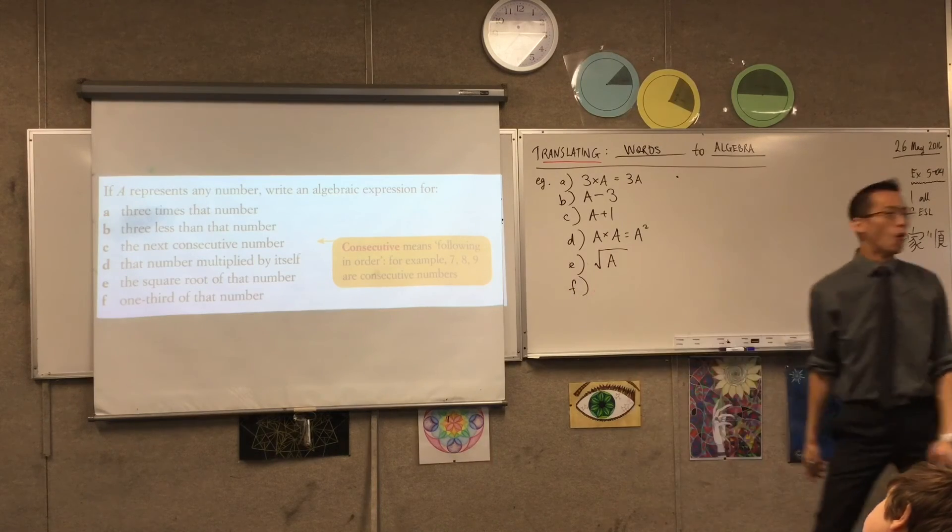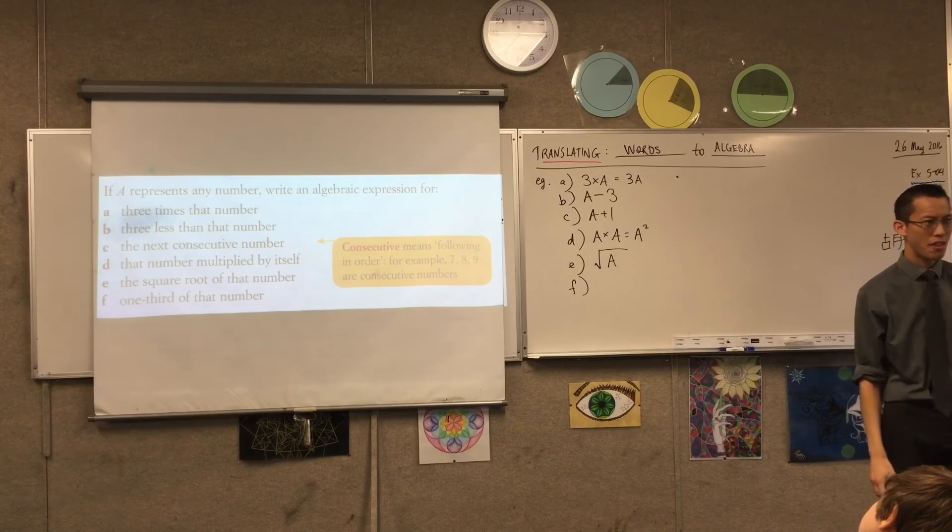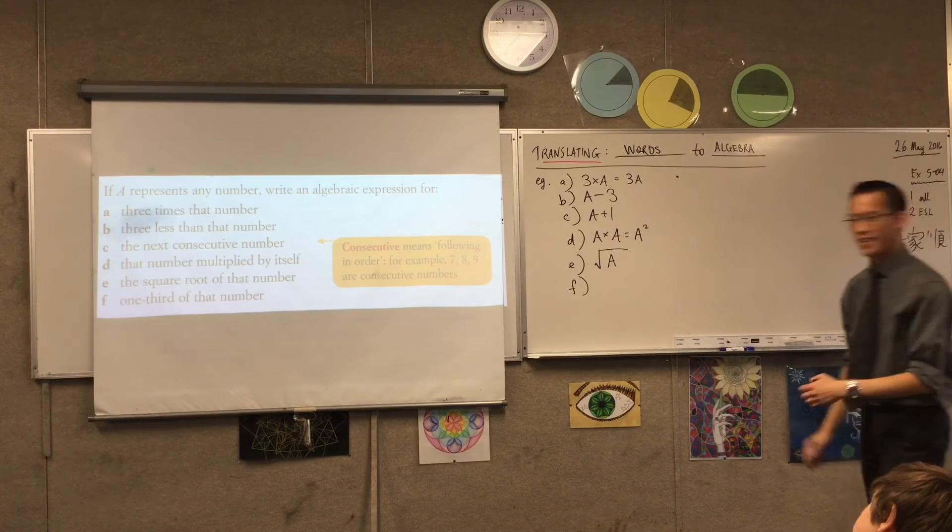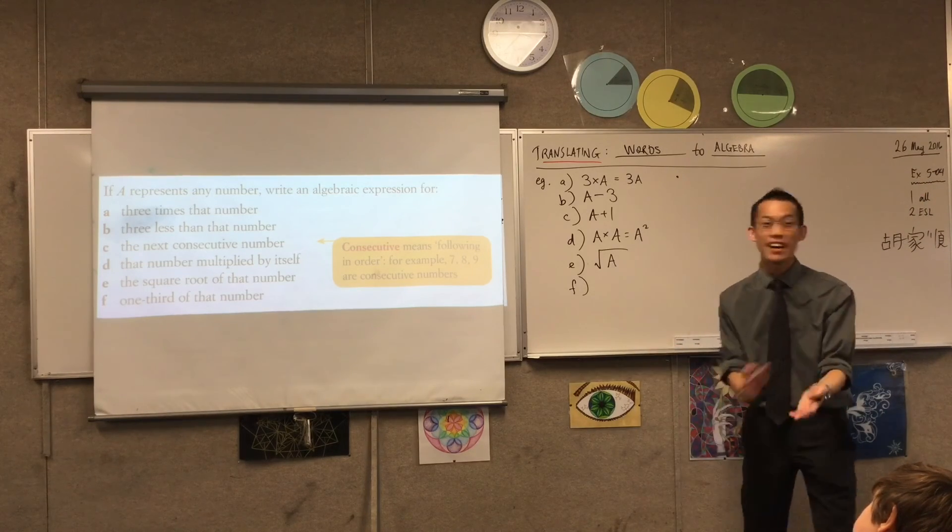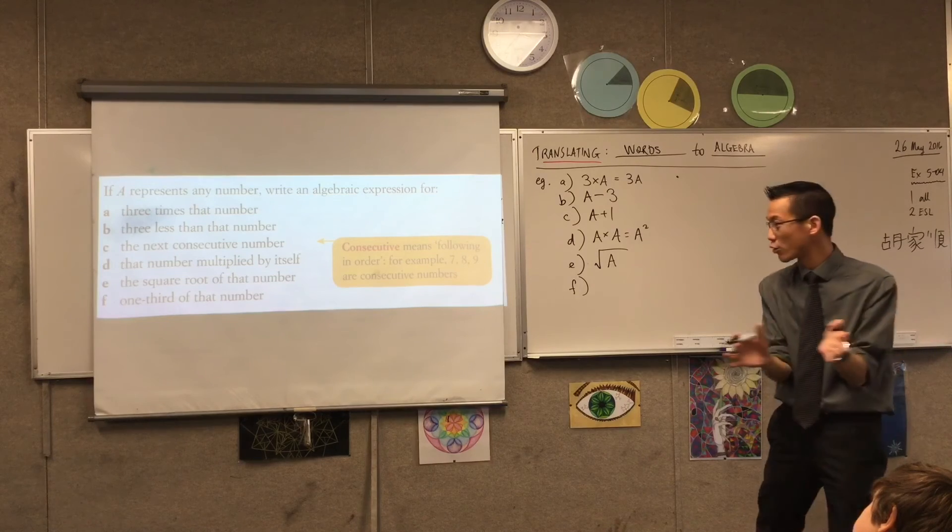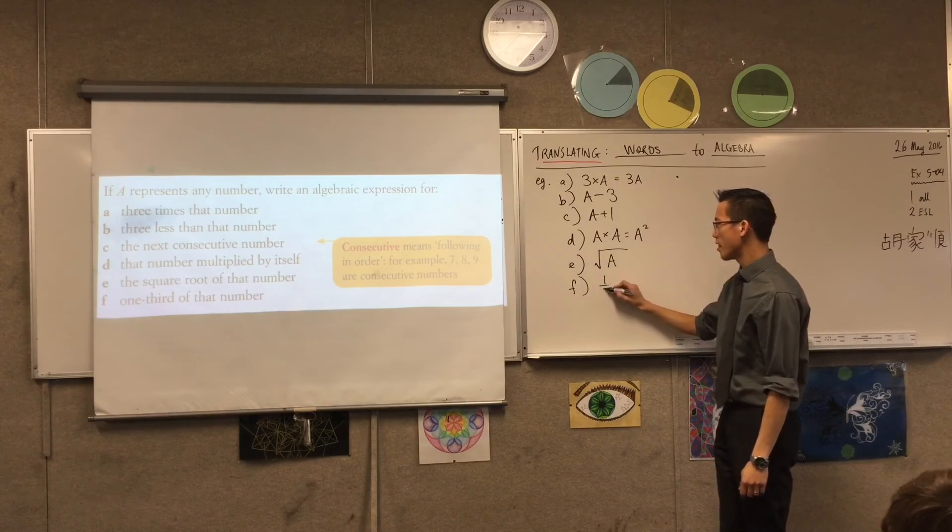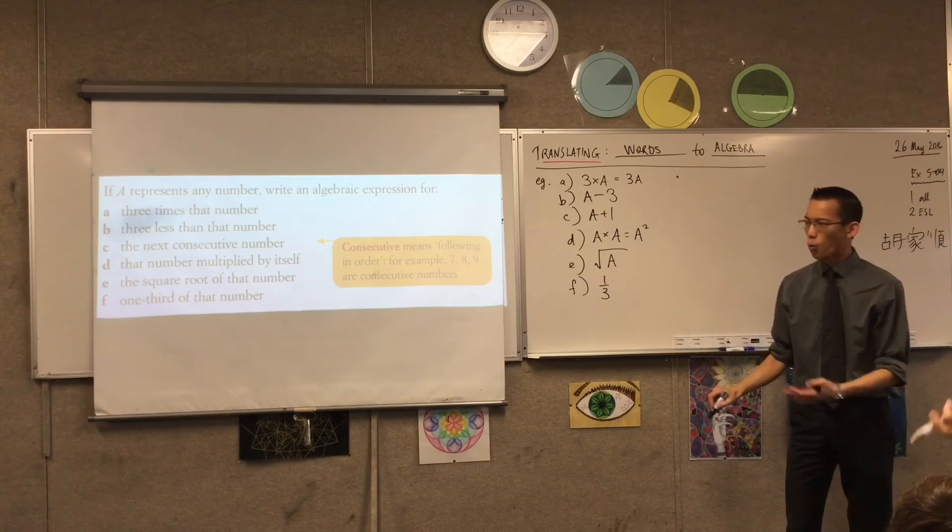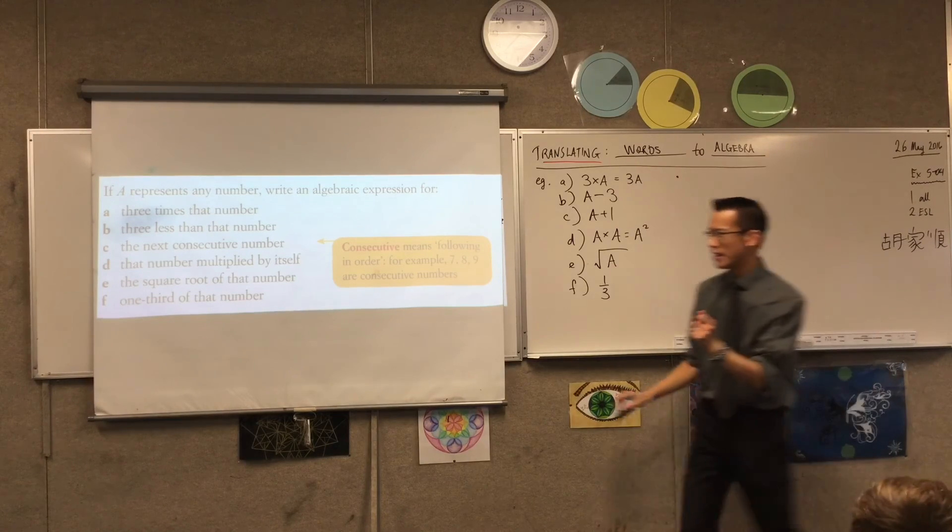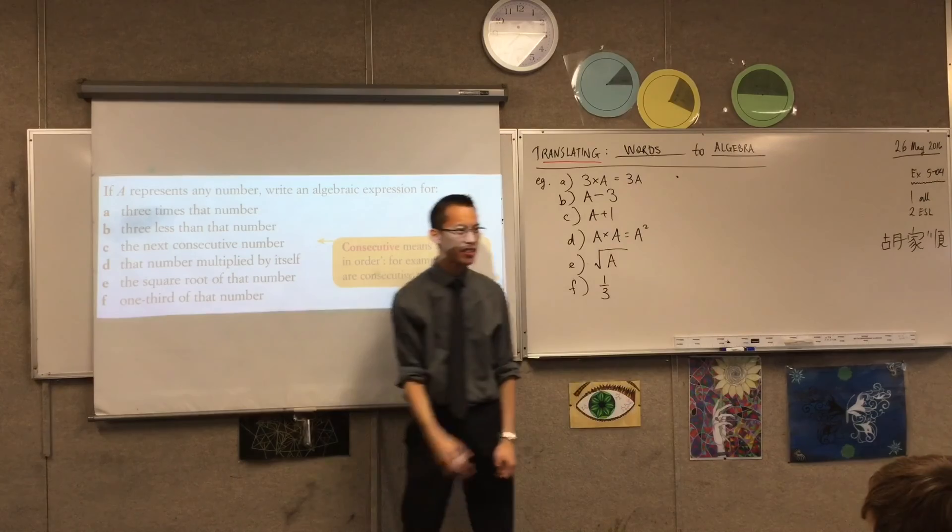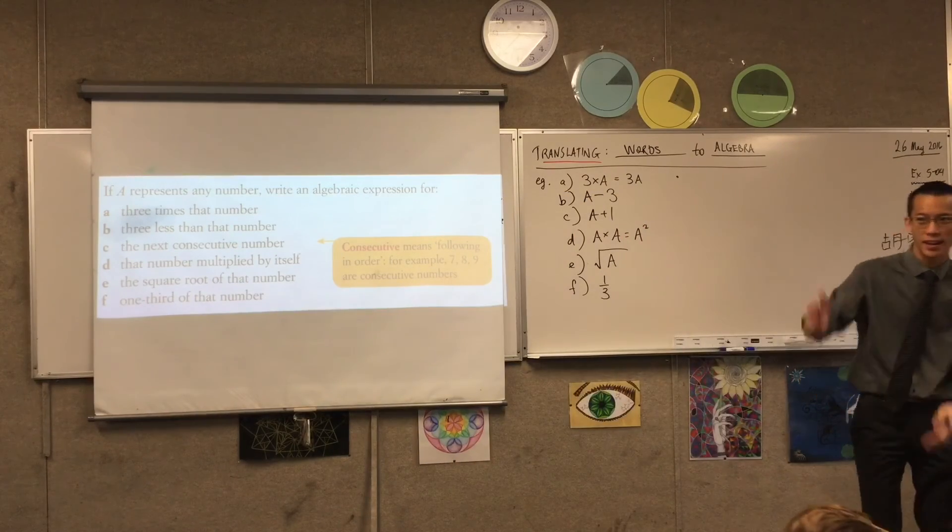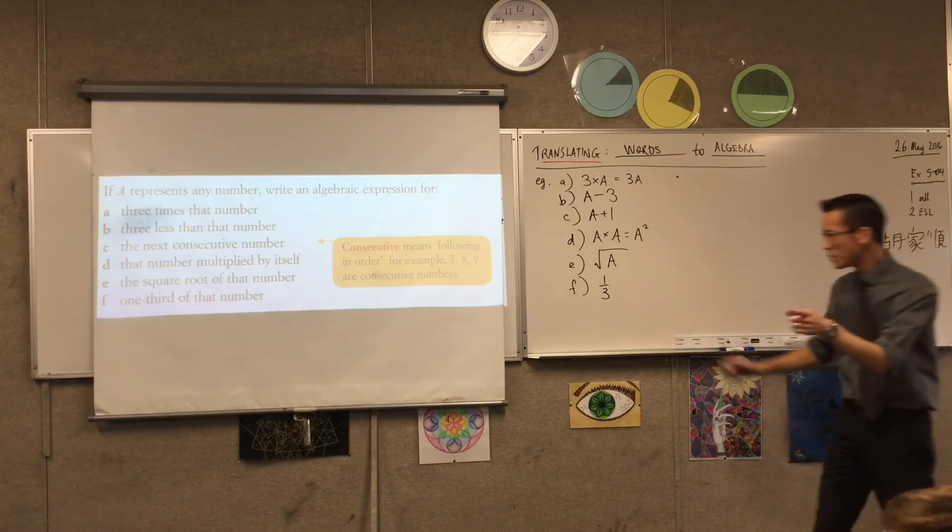Okay. Last one. 1 3rd of that number. 1 3rd of it. Yeah. 1 3rd divided by A. Okay. So... Now, this is interesting. There's a few different ways I could write this. Okay? So I'm going to start with this. I can say 1 3rd... What operation is of? Like, 3 of these or 5 of these. Which one would it be? Yeah, Aiden.